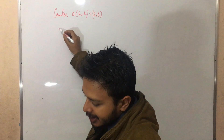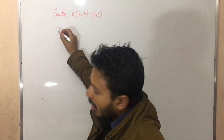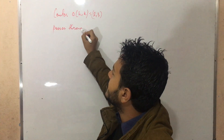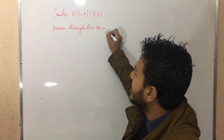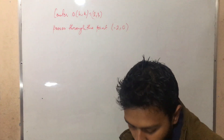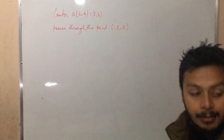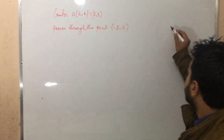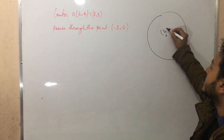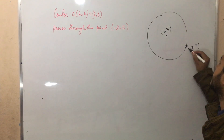The center is the radius. It passes through the point minus two comma zero. Can I have a black marker or a green marker please? I am going to assume the point of minus two comma zero.